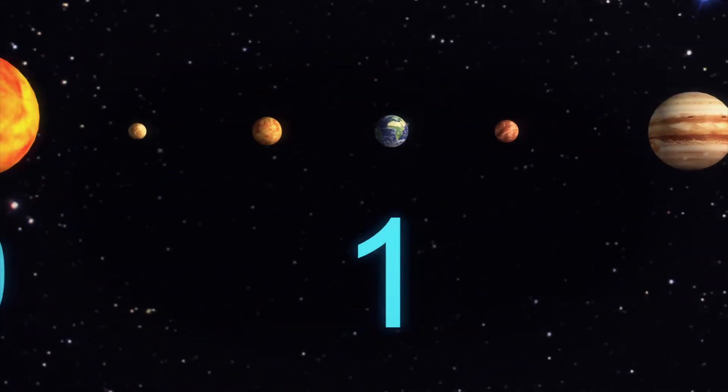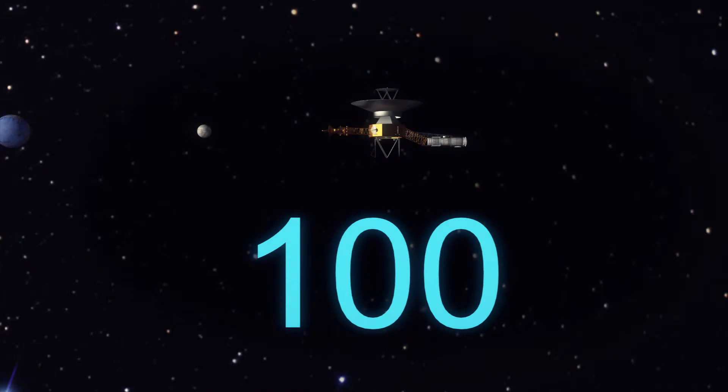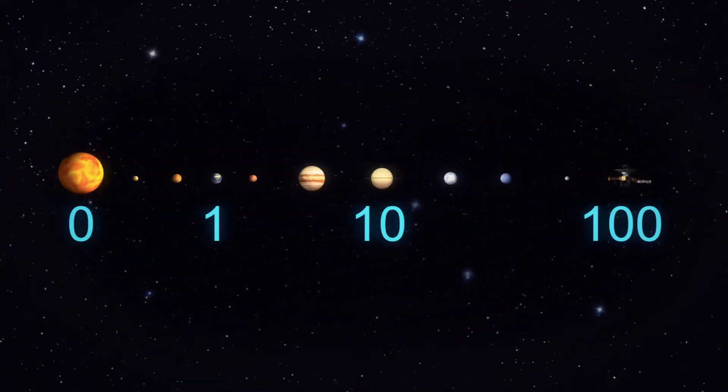For scale, if the Sun is 0, Earth is 1, Saturn is about 10. Then the limits of the solar system would be around 100, where the Voyager is now.